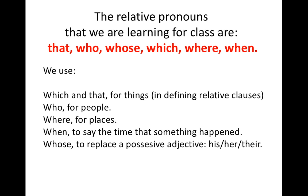The relative pronouns we're going to learn for this class are: that, who, whose, which, where, and when. Remember that we use which and that for things in defining relative clauses. We use who to introduce a relative clause in which we're talking about people. We use where for places, and when to introduce a relative clause in which we talk about the time that something happened.